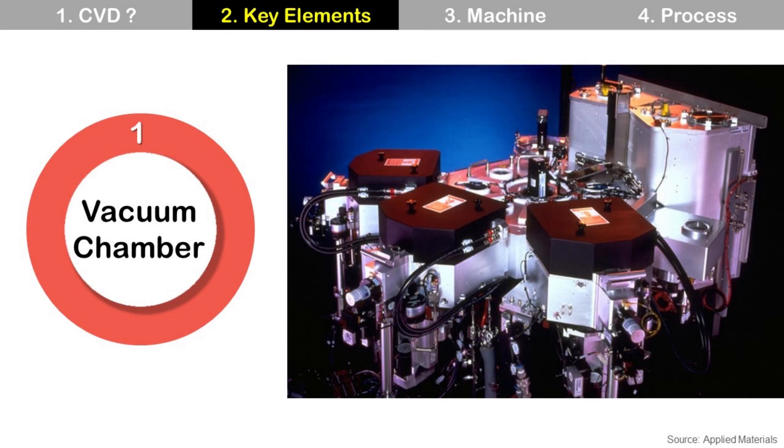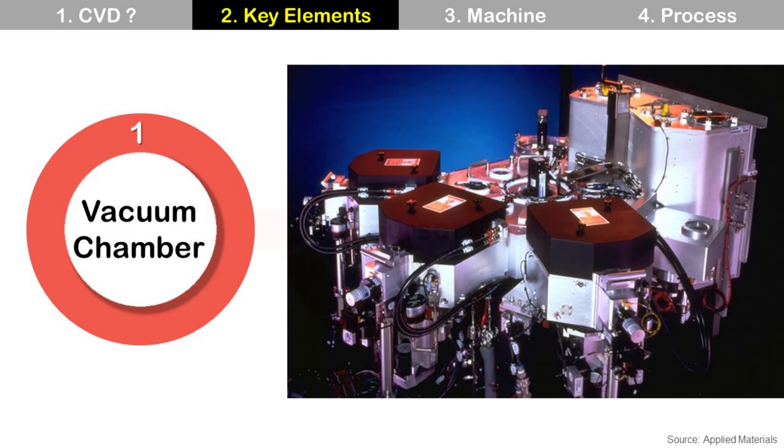There are three key elements in CVD. First one is vacuum chamber. Vacuum chamber is a type of reactor and provides vacuum environment for chemical reaction of precursor.